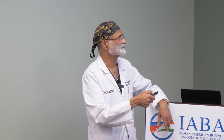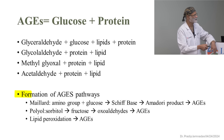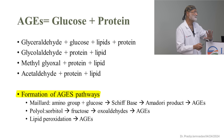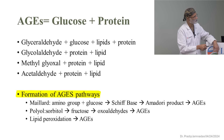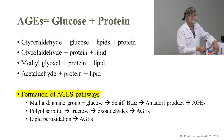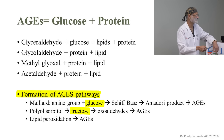Advanced glycation end products cause redox potentials to change, reactive oxygen species to form, and total malfunction in the body. Every cell becomes dysfunctional. That's also what gives you the hangover the next day. There are three main ways these bad boys get created: sugar, fructose, and lipid peroxidation. Fructose is a major pathway by which you get advanced glycation end products.